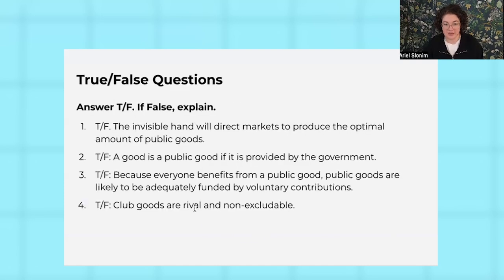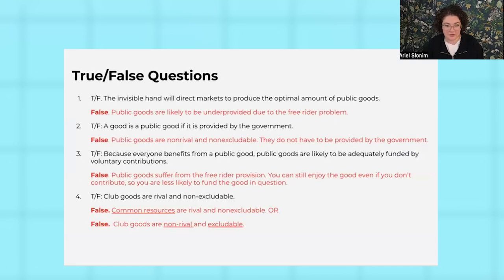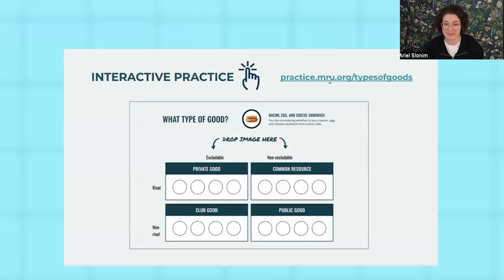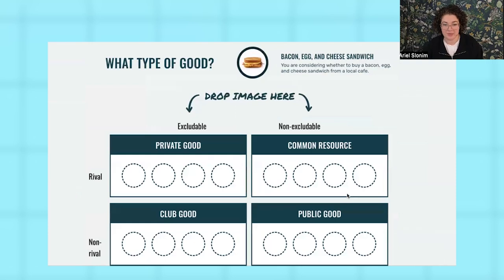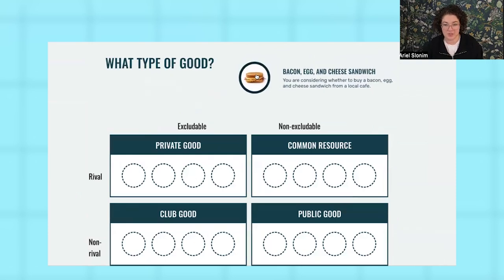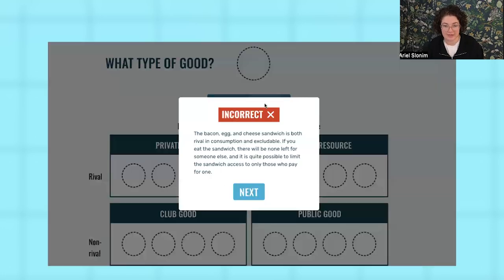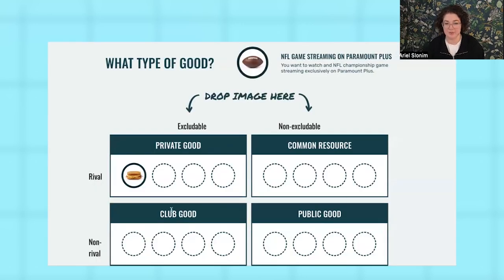We give you an exercise with questions for students to think through the provision of public goods and test their knowledge in different situations. For example: 'A good is a public good if it's provided by the government' — students have to correct that true/false question, and we've got an answer key. We also have an interactive practice on the four types of goods where you drag and drop based on what type of good you think it is. A bacon, egg, and cheese sandwich — let's say that's a common resource. When students get it incorrect, they get elaborative feedback explaining the right answer and why. There are multiple examples, and it shows student scores at the end so you can have them submit a screenshot to check for patterns.